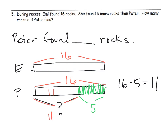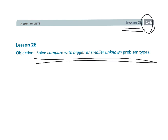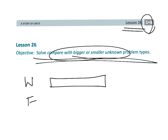So Peter found 11 rocks, because that shows us how many rocks Peter found. And that wraps up first grade module six, lesson 26. We're solving some specific word problems, but really the focus is using those tape diagrams to model our thinking.